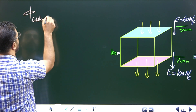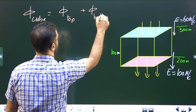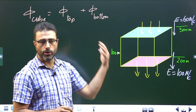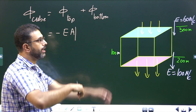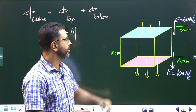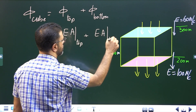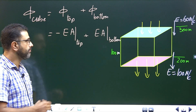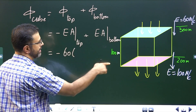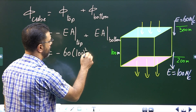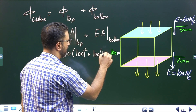Flux through the cube equals flux through the top face plus flux through the bottom face. Flux through the top face is E times A, but negative because this is inward flux — field is inward, area vector is outward along the outward normal, so this is negative. So this is minus E·A for the top face, plus E·A for the bottom face, which is positive. Field at the top face is 60 N/C, so minus 60 times area, where side length is 100 m, so 100 squared. Plus E for the bottom face is 100 N/C, so 100 times 100 squared.